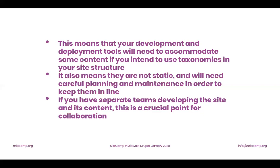Taxonomy terms are not static — they need careful planning and maintenance to stay in line. It's a garden that needs to be weeded and tended. When you have more stakeholders, you need to make sure people don't add things that don't belong or remove something others were relying on. You need to make sure content developers understand the taxonomy system, and that the content team you hand the site off to understands how to drive it.